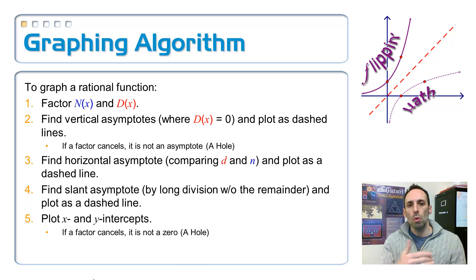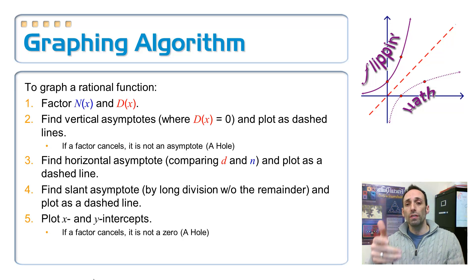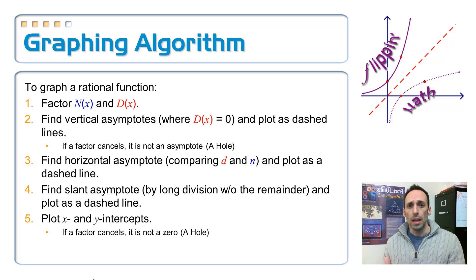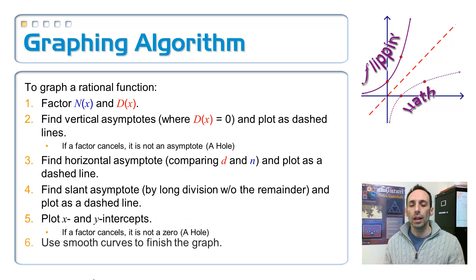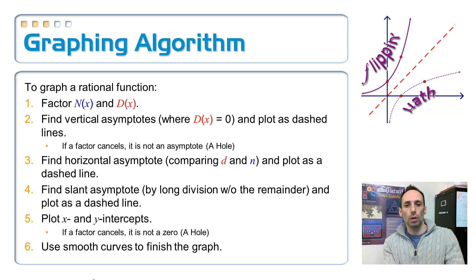Now I want to find my x and y intercepts. I get my x-intercepts from where the top is equal to zero. My y-intercept is ordinarily just the ratio of the constant terms — I plug zero in for x and everything disappears except for the constant terms. If you have a factor in the top that cancels with something in the bottom, you don't have an x-intercept for that point either. Finally, you're going to connect all of these points and follow the lines of the asymptotes in nice smooth curves.